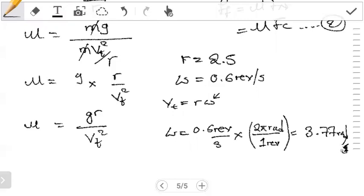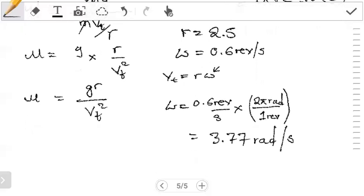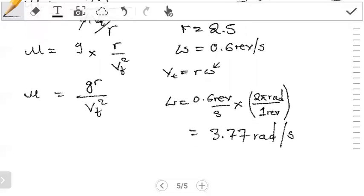So when we multiply this we get the angular velocity as 3.77 radians per second. Okay, so let's just write that better, so that is 3.77 radians per second.